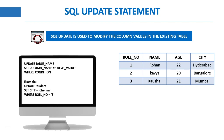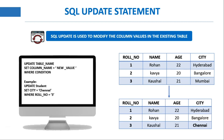Now if we execute this statement, this will be the output where the city, which was previously Mumbai, has been changed to Chennai. So in this way you can use the update statement.